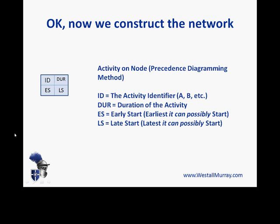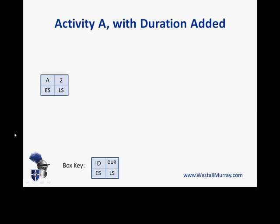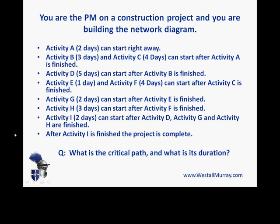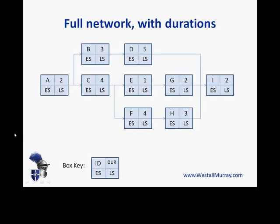Early start and late start boxes are also shown, but for this first part video, we won't be using those two boxes. For Activity A, you may recall it was a two-day duration — Activity A, two days, straight out of the question. The question for Activity B and C said those activities can start after Activity A is finished. Activity D can start after Activity B is finished, and so on. Simply by reading the question and working left to right, we can put in all of those activities as boxes with their durations in relation to other activities. There's our full network — pretty straightforward to construct.